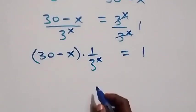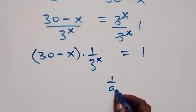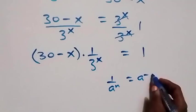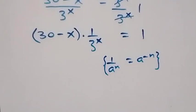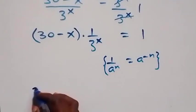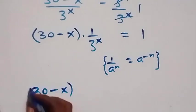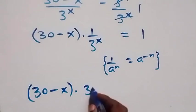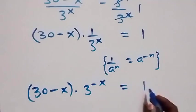Following the law of indices, 1 over a raised to power n is the same thing as a raised to power minus n. So when we apply this to what we have, this becomes 30 minus x multiplied by 3 raised to power minus x, now equals to 1.